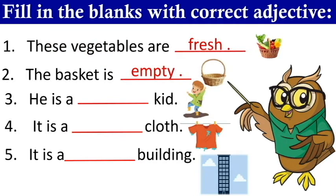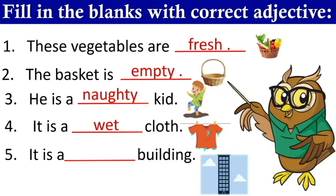Third one: he is a blank kid. When you see the kid, what do you feel? Yes, he is a naughty kid. Fourth one: it is a blank cloth. Here the cloth is wet — it is a wet cloth. Fifth one: it is a blank building, and the building is tall — it is a tall building. Well then, you completed the first activity.